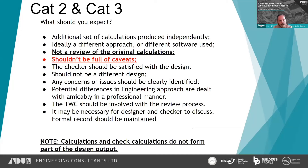As a Cat 2 or Cat 3 checker, you should get an additional set of calculations produced independently. Regardless of whether it's Cat 2 or Cat 3, you can't have a Cat 2 check without someone doing their own calculations — it's written down in black and white repeatedly. Ideally you should use a different approach or different software; it's not always possible, but ideally it's not a review of original calculations.